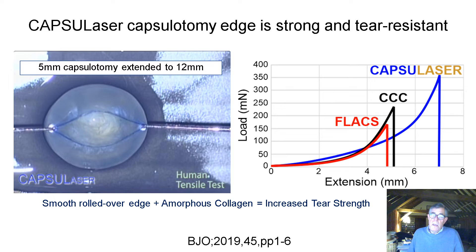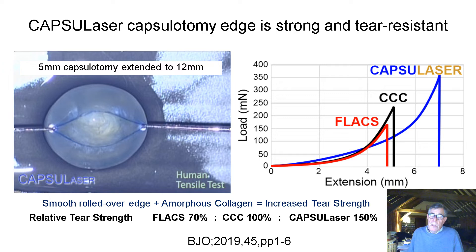We did a study looking at the strength of the capsulotomy edge, comparing paired cadaver eyes treated with FLACS, CCC, and Capsulase — each individually compared. Taking CCC as 100%, FLACS was 70% and Capsulase was 150% relative tear strength, and this has been reported in the BJO.